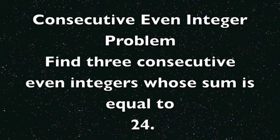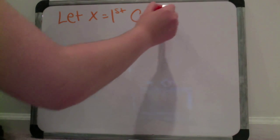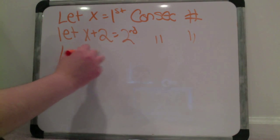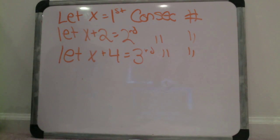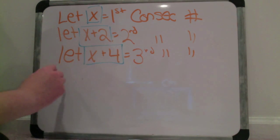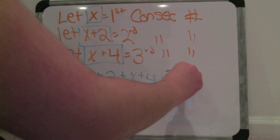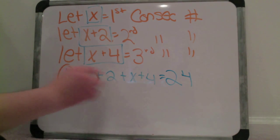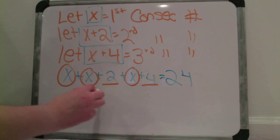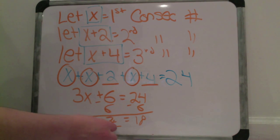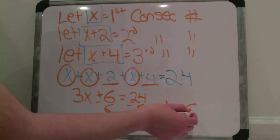Next we're going to do a consecutive even integer problem. We want to find 3 consecutive even integers whose sum is equal to 24. The first thing we do is make our let x statements. Let x equal first consecutive even integer. Let x plus 2 equal second consecutive even integer. Let x plus 4 equal third consecutive even integer. We combine all of these together and get x plus x plus 2 plus x plus 4 equals 24. Combining like terms, we get 3x plus 6 equals 24. Then we subtract 6 from each side and get 3x equals 18. Then we divide by 3 on each side and get x equals 6.